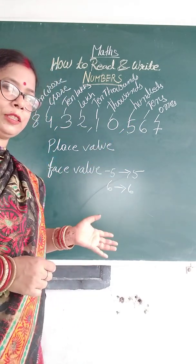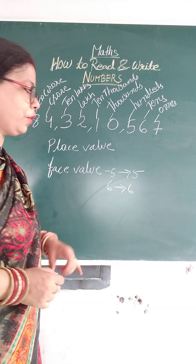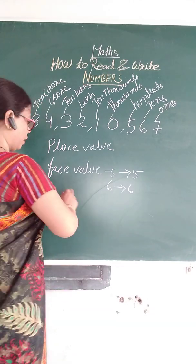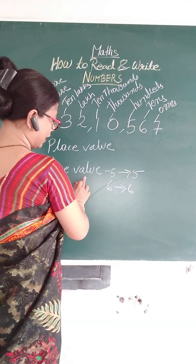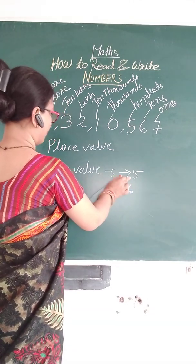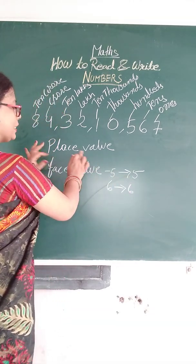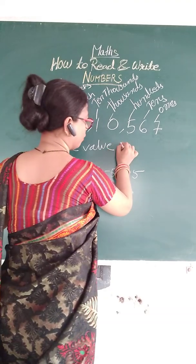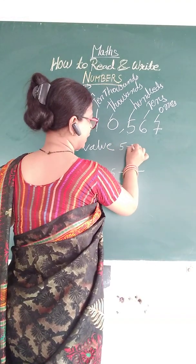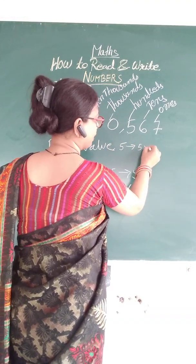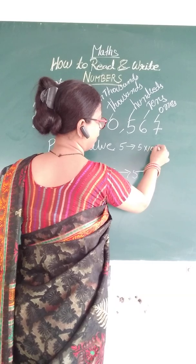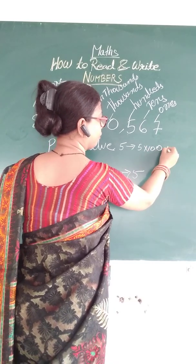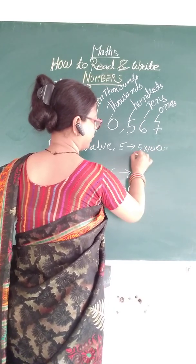And Roman numbers — I will explain those later. So, face value of five is five. Place value: five multiplied by its place, which is hundreds, means five hundred.